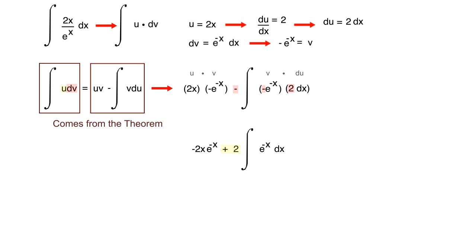This integral we have now, e to the negative x, is again just a basic u substitution. I'm sure you guys are probably familiar with this. This is a little more of a primitive technique, but I'm going to go ahead and work it out anyway.